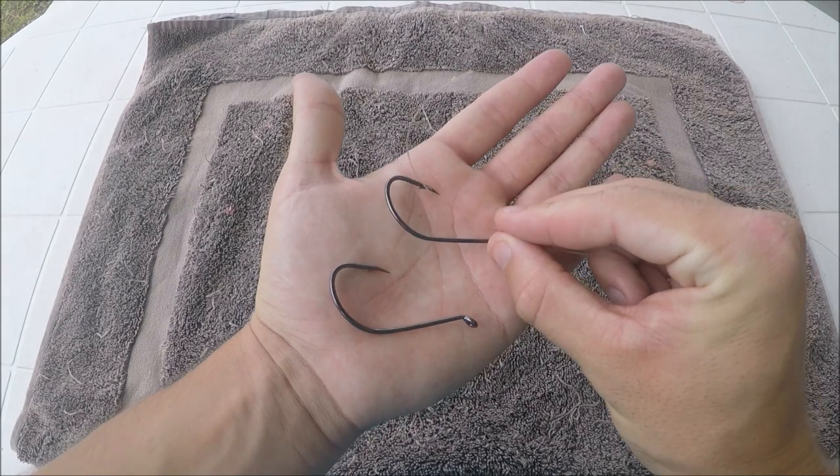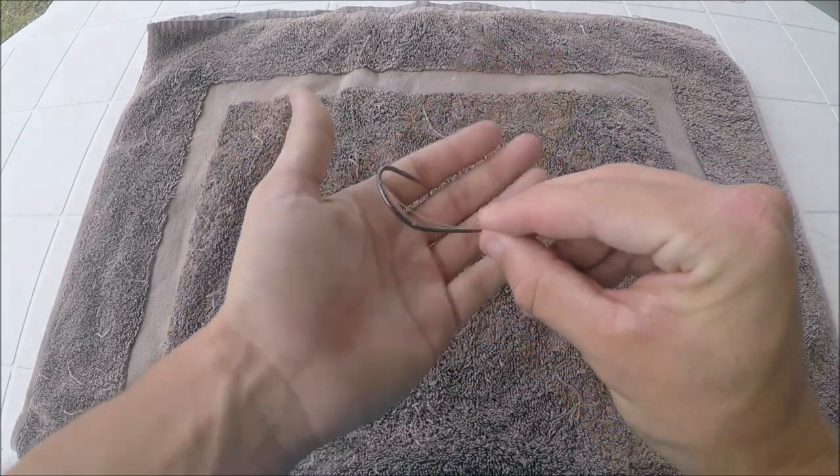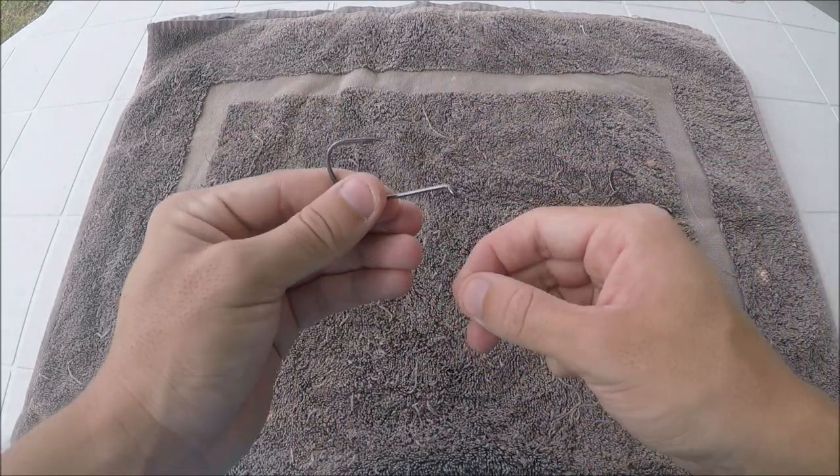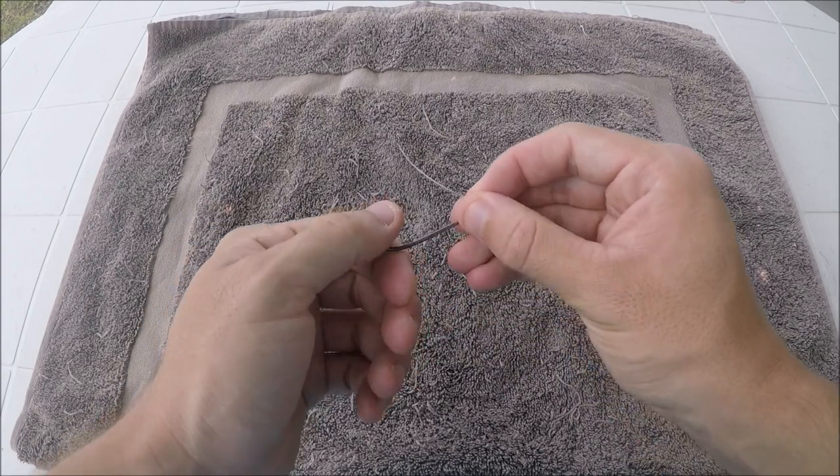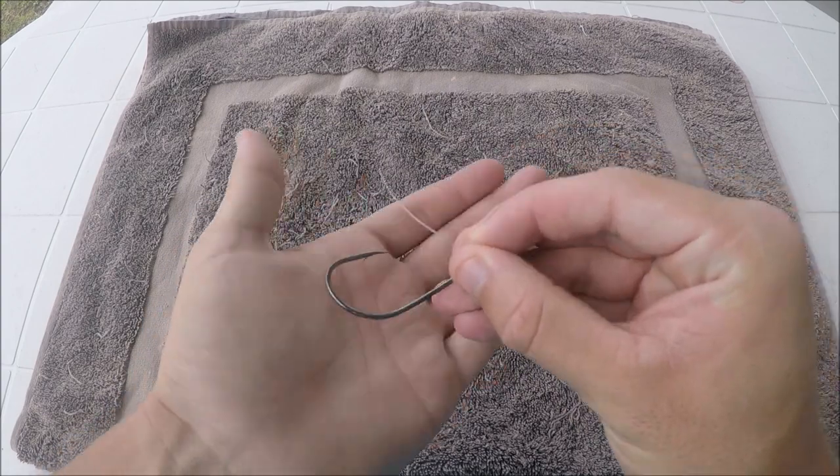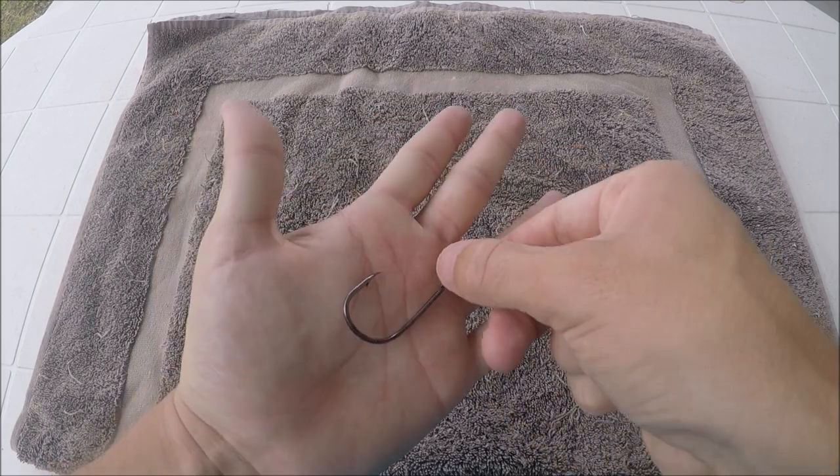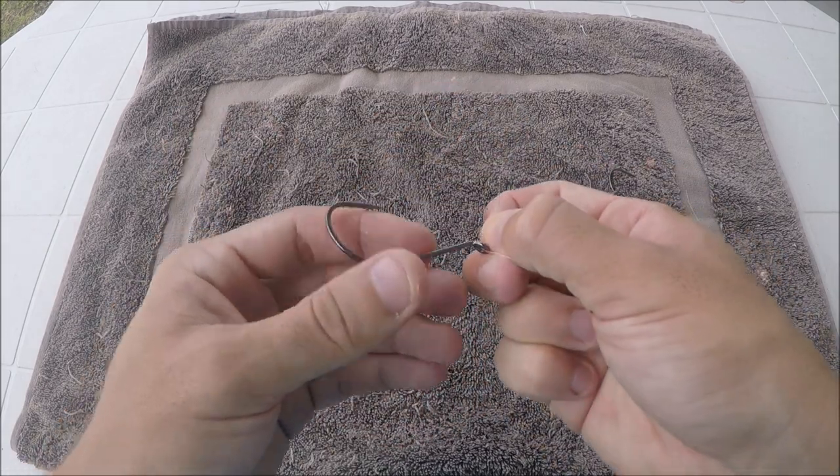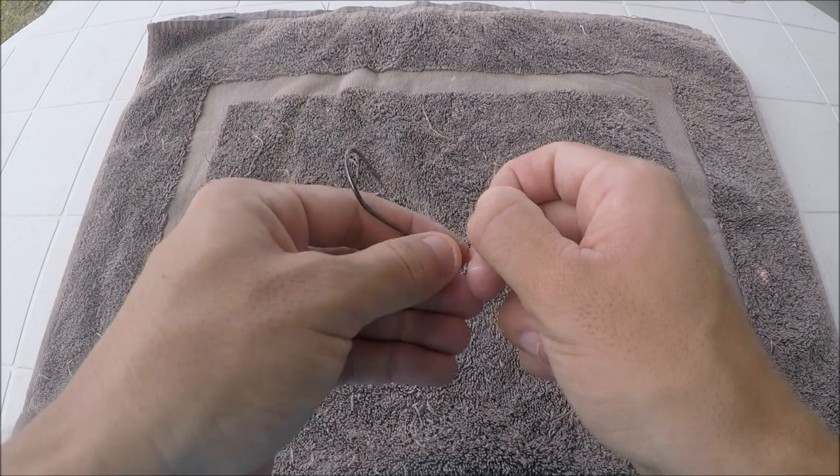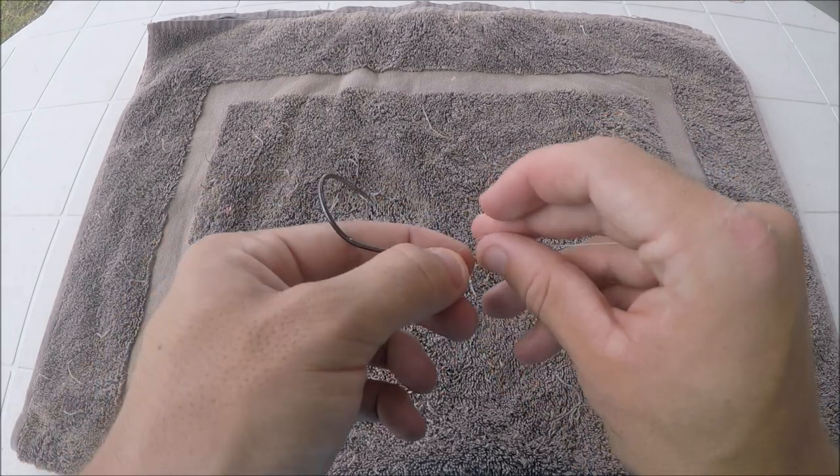So the first thing you're going to do is just chuck one of your hooks over there and focus on this one now. Now the easiest way and I think best way to tie on your bottom hook here is to go up through the back, the offset back, and you're just going to tie a blood knot or a uni knot or something like that that you would just normally use to attach one hook.